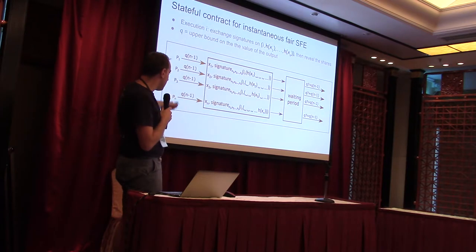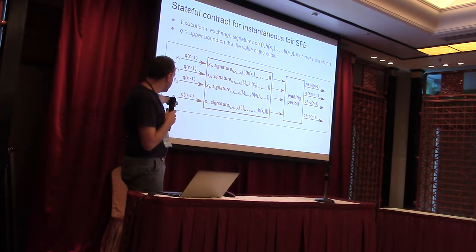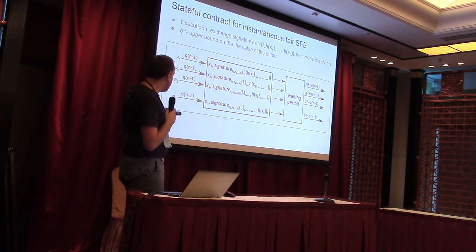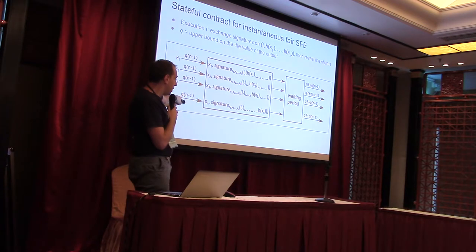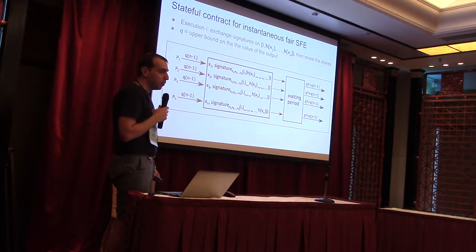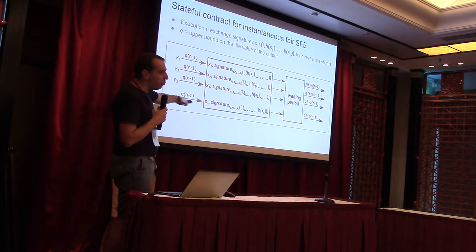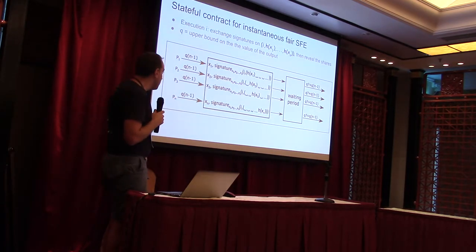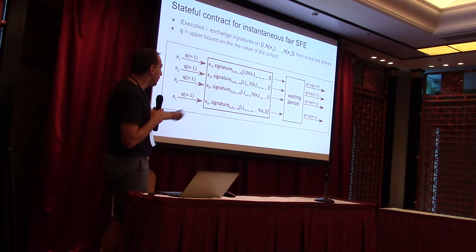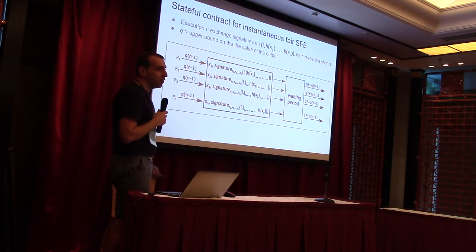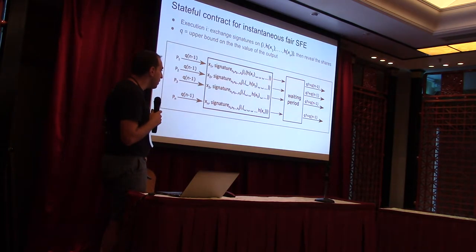If one party is malicious and everybody else is honest, after the waiting period we give Q coins in compensation to each of the honest parties. This guarantee is optimal — everything here is constant-round and the security deposit is the minimum you can hope for. This is basically how it works.